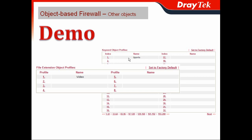I can later use this to create a firewall rule to prevent employees from watching sports games during working hours. Also, I can use the file extension object to create objects that prevent employees from using certain file extensions for something during working hours — for example, watching video — so I can create one file extension object named Video.